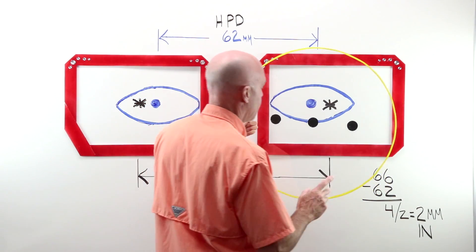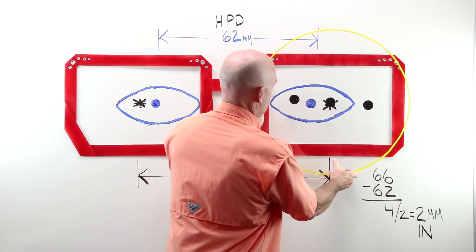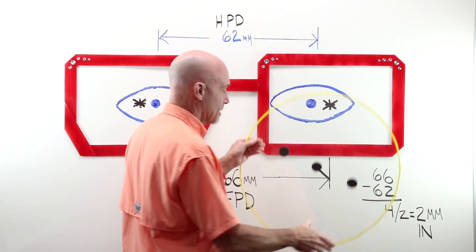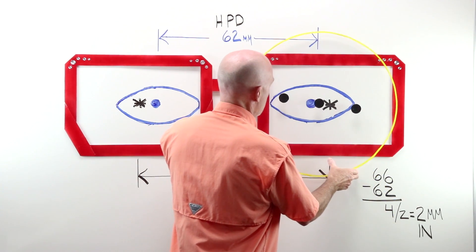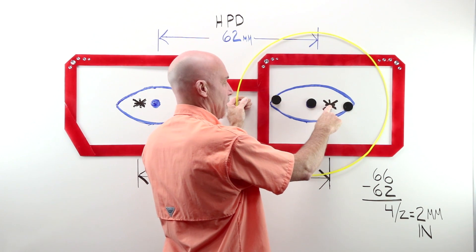I would take my center dot, my lens OC, and if I was running an edger on auto, I would place it there. But because I am manually de-centering this lens, I would move it over two millimeters, and my block would be stuck here.